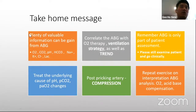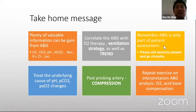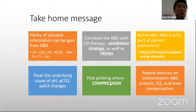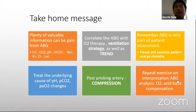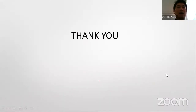Take-home messages: There is plenty of information you can gain from ABG — oxygen, CO2, bicarb, pH, and electrolytes. Always correlate ABG with oxygen therapy, ventilation strategy, and trend. Remember, ABG is only part of patient assessment — always examine the patient and clinically treat the underlying cause of acidosis, CO2 retention, or low oxygen. After arterial puncture, do compression over the arterial site to avoid aneurysm formation, especially at brachial or femoral sites. Repeat practice in ABG interpretation is important — every day when you see a patient, interpret the ABG yourself and look for oxygen and acid-base compensation.